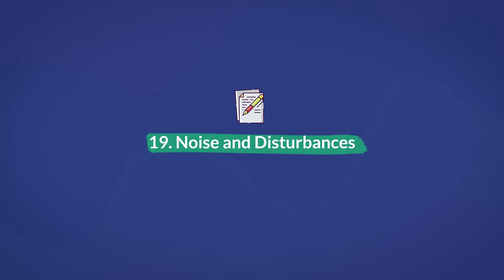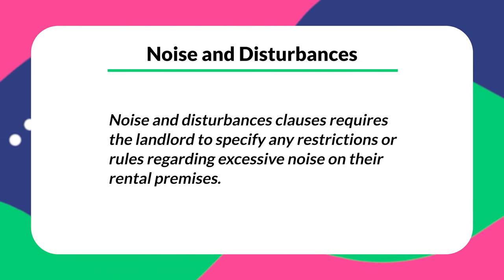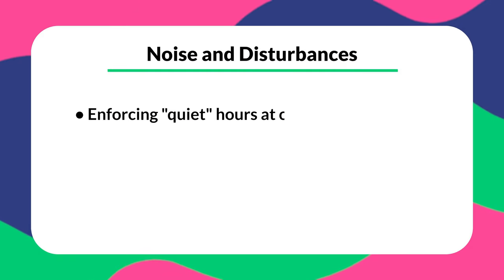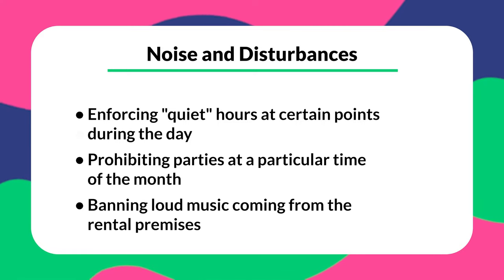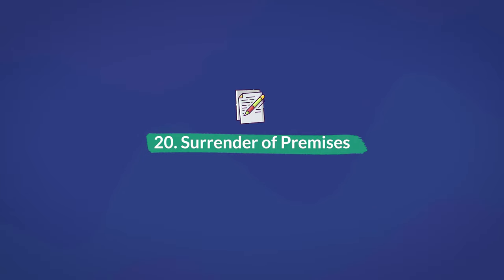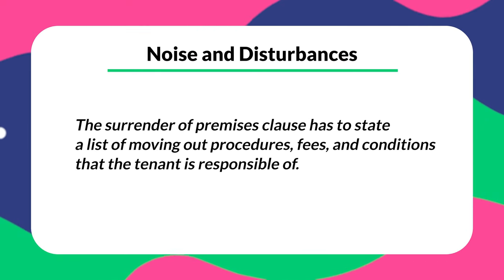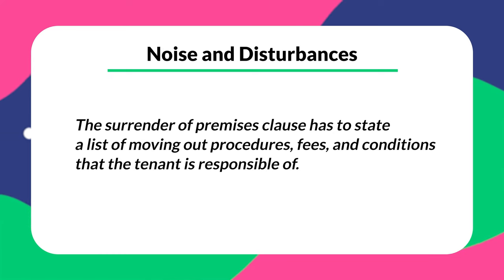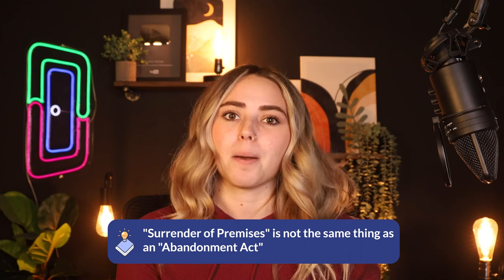Number nineteen is noise and disturbances. This requires the landlord to specify any restrictions or rules regarding excessive noise on their rental premises. These rules might include enforced quiet hours at certain points during the day, prohibiting parties at a particular time of the month, and banning loud music coming from the rental premises. Number twenty is surrender of the premises. Aside from including a mutual agreement between the landlord and the tenant to relinquish the property at any given time, the surrender of premises clause has to state a list of moving out procedures, fees, and conditions that the tenant is responsible for, as well as the security deposit return conditions. Keep in mind that surrender of premises is not the same as the abandonment act, which is when the tenant surrenders the property without mutual consent.